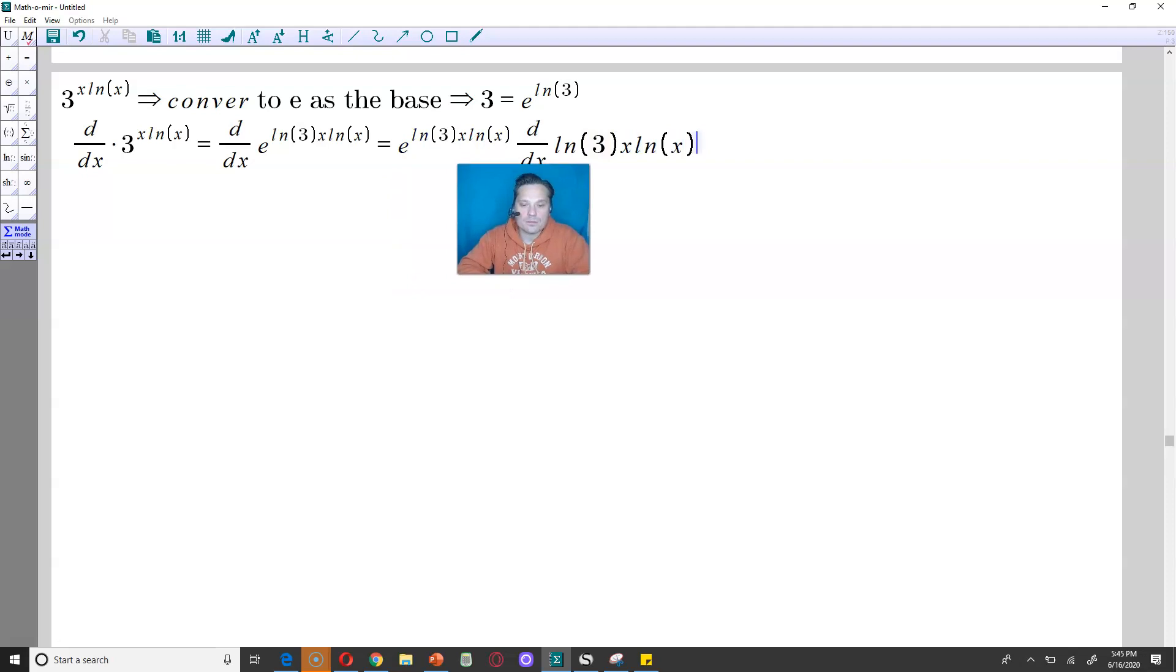But now there's a basic rule. ln of 3 is a constant, so the constant rule for the derivative is you can pull that outside the derivative. So in other words, it's going to look like the following next, essentially.